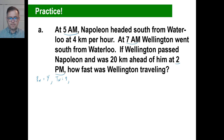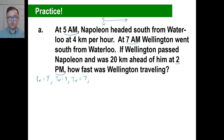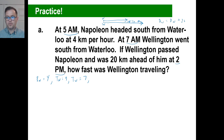Wellington starts at 7am and goes to 2pm, so the time of Wellington is 7 hours. Now we just need the distance equation. Napoleon heads south; Wellington heads south from the same place and passes Napoleon, ending up 20 kilometers ahead. So the distance of Wellington equals the distance of Napoleon plus 20. Written out: rate of Wellington times time of Wellington equals rate of Napoleon times time of Napoleon plus 20.